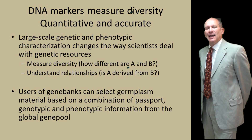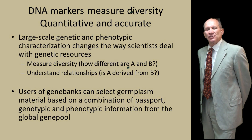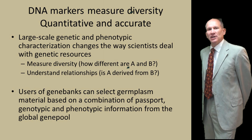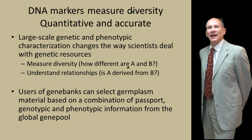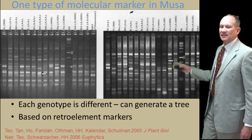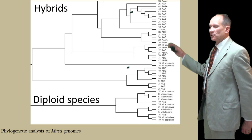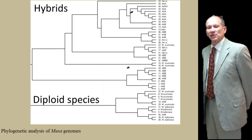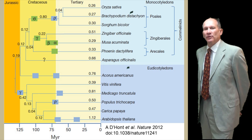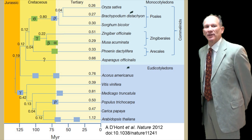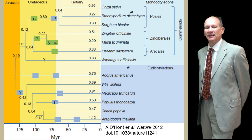DNA markers are able to measure diversity in a quantitative and accurate way, and that is changing how we can use and understand genetic resources, going beyond morphological studies. Users of gene banks can select germplasm based on genotype data as well as phenotype and provenance, and then apply that into breeding. Here's an example of some banana lines where each one has a different pattern of its DNA shown in a tree of relationships — at the top mostly the hybrid bananas, at the bottom the diploid species — showing which are the most diverse and which might be the best germplasm, and placing bananas within the broader monocotyledonous plant kingdom compared to the dicots.